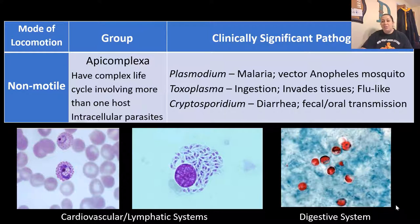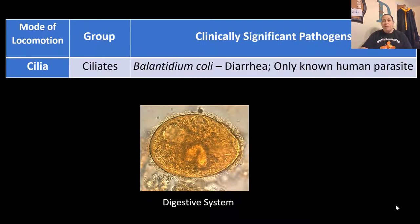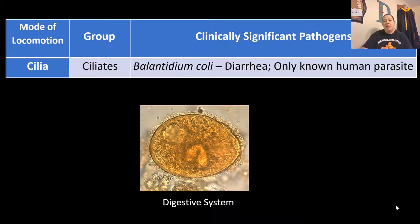A big issue with the fecal-oral route is hand hygiene — you need to wash your hands after you go to the bathroom because if you're infected, you could spread it to others or back to yourself. The last type of locomotion seen in protozoa are the ciliates, which have little hair-like extensions that move back and forth. The only known human parasite in the ciliates is Balantidium coli, which can cause diarrhea.